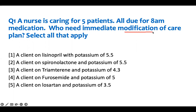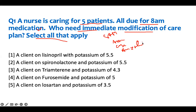The question asks: who needs immediate modification of the care plan? Select all that apply. Our ask is that somebody needs immediate care. A nurse is caring for five patients, all due for 8 a.m. medication. Our buzzwords: medication is due and we need to intervene — deciding whether the medication should be given or not. Starting with number one: a client on lisinopril with a potassium of 5.5.